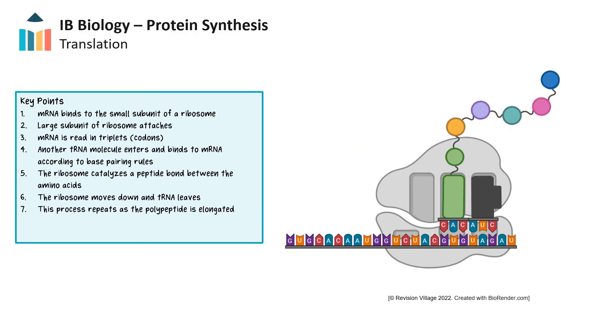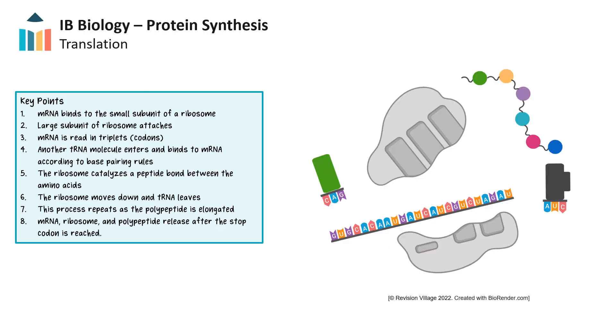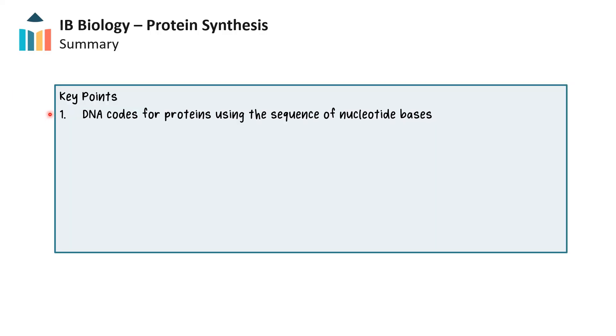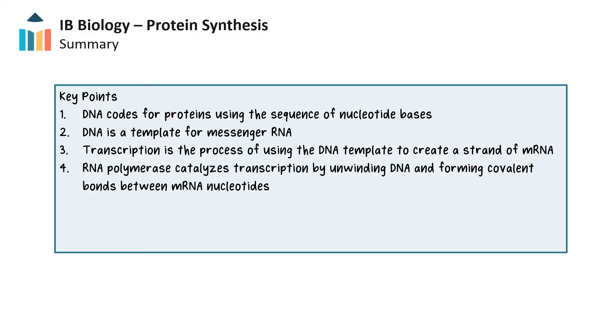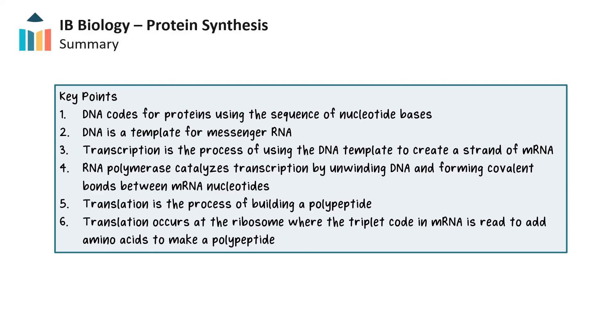The end of the polypeptide chain is signaled by a stop codon, which leads to the release of the polypeptide. Now, the free polypeptide is able to fold into a protein or be processed further in the endoplasmic reticulum. In this video, we saw how DNA codes for proteins by having a particular order of nucleotide bases, which forms a template for messenger RNA. We saw that transcription is the process of using DNA as a template to create a strand of mRNA using complementary base pairing rules. RNA polymerase catalyzes transcription by unwinding the DNA helix and forming covalent bonds between mRNA nucleotides. Finally, we looked at translation, the process of building a polypeptide. We saw how this occurs at the ribosome where the triplet code in mRNA or codons is read and amino acids are added to the growing polypeptide chain, one amino acid at a time.